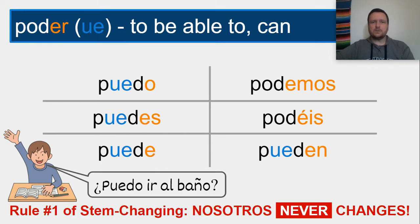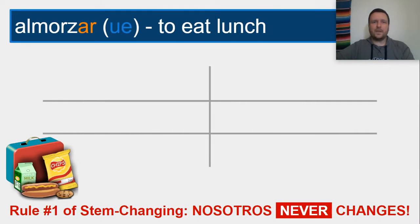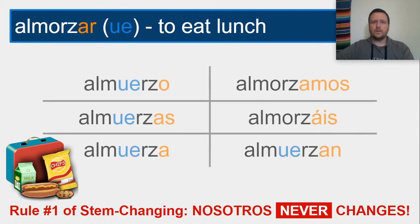Let's go ahead and try another one. The forms of almorzar are: almuerzo, almuerzas, almuerza, almorzamos, almorzáis, almuerzan.